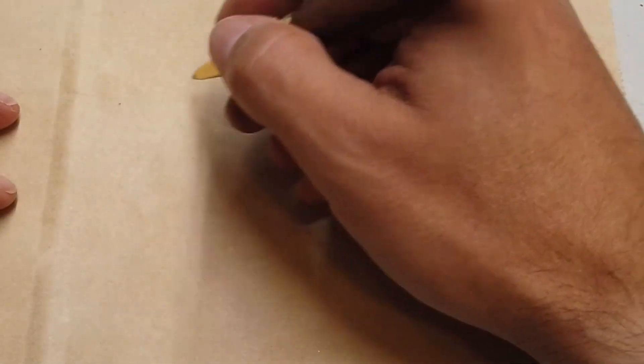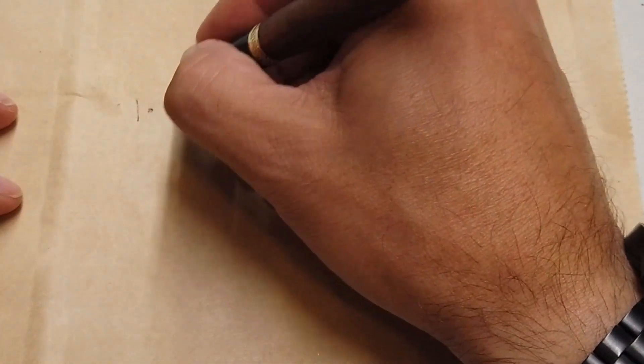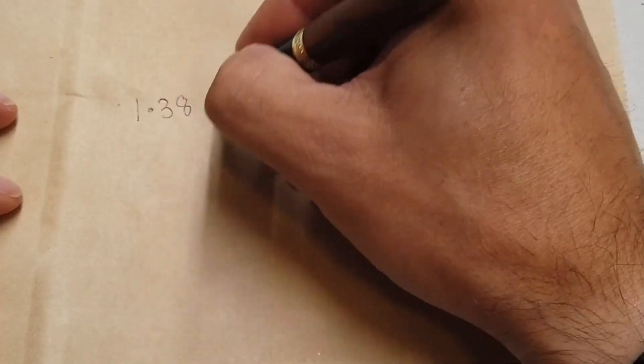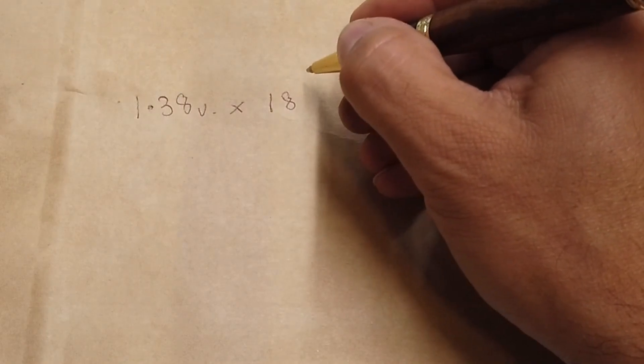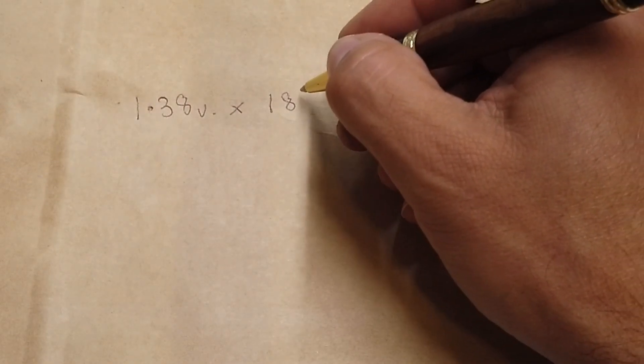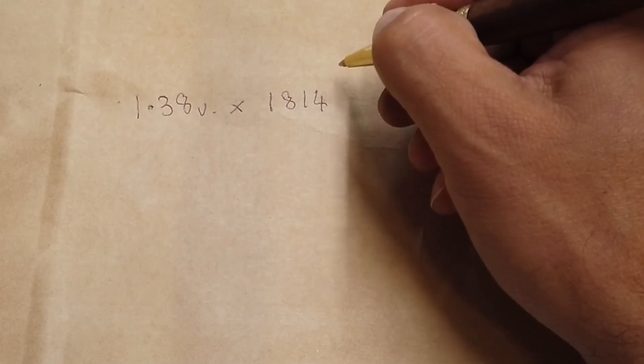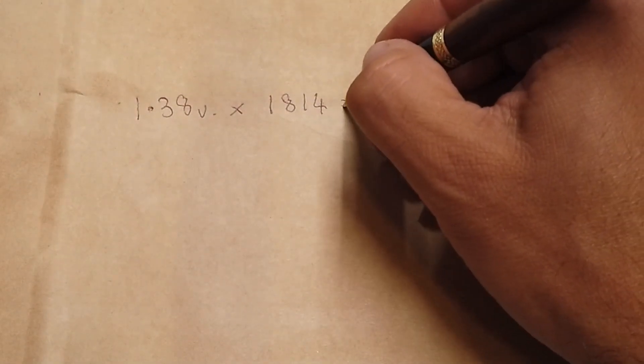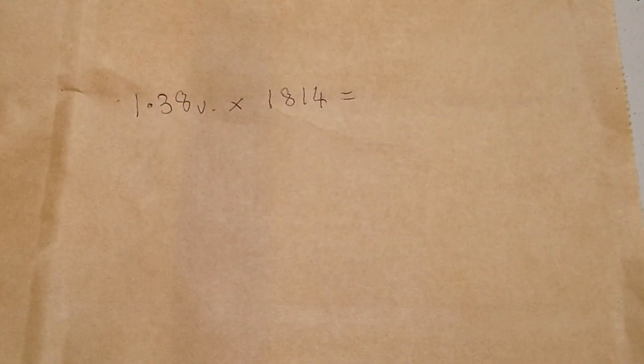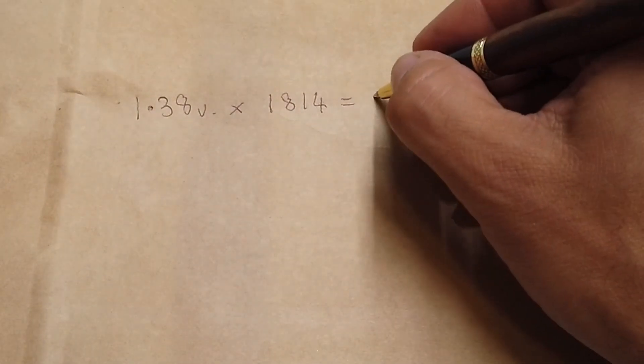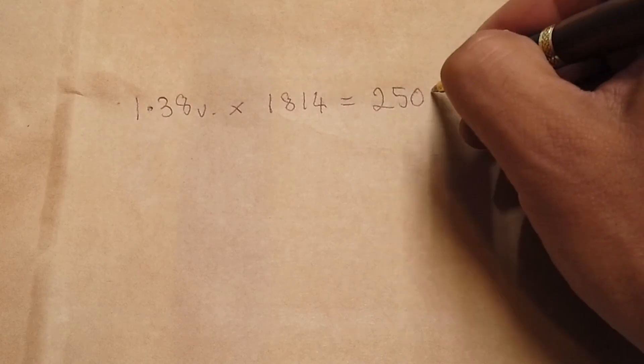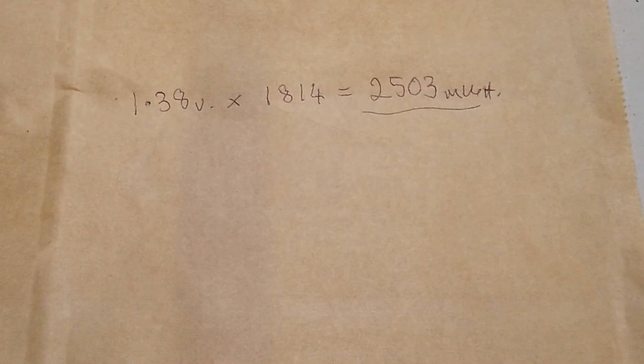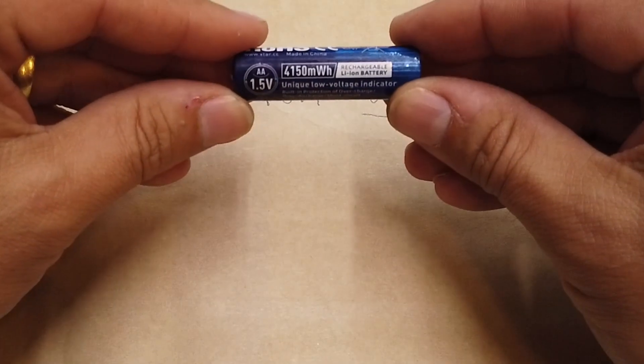All right folks, so from the previous experiment we established that we were seeing about 1.38 volts, and the battery dumped out 1,814 milliamp hours, which is equivalent to 2,503 milliwatt hours.